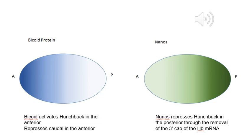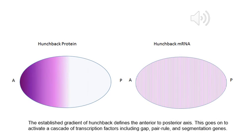Nanos mRNA is located in the posterior and diffuses anteriorly. Nanos represses hunchback in the posterior by removing the poly-A cap of the mRNA, which results in its degradation. Maternal hunchback mRNA is deposited evenly throughout the egg, but the combined effects of nanos and Bicoid establish a hunchback protein gradient.